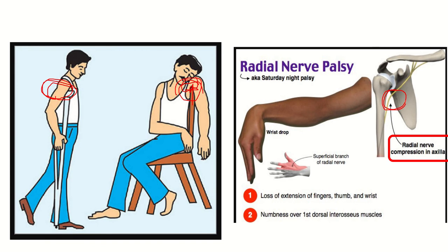In this part of the axilla, there is a nerve passing — and this nerve is the radial nerve. The radial nerve may be compressed due to the use of the crutch, because the crutch is placed at the axilla where the radial nerve lies. So radial nerve injury is very common in crutch palsy.